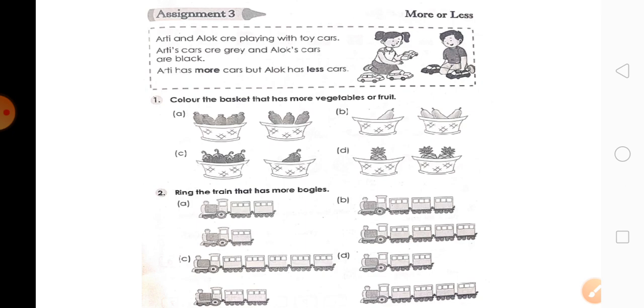फिर, assignment 3 में more and less की practice है. Ariti and Alog are playing with toy cars. Ariti's cars are grey and Alog's cars are black. Ariti has more cars but Alog has less cars. है ना? वैसे ही आपको more and less color करना है.